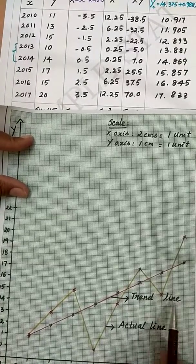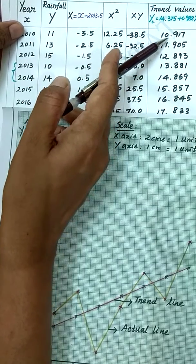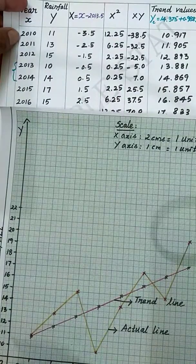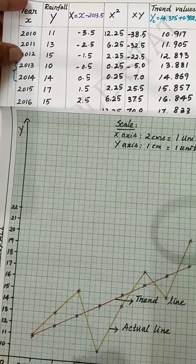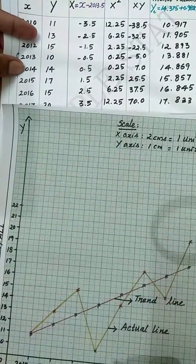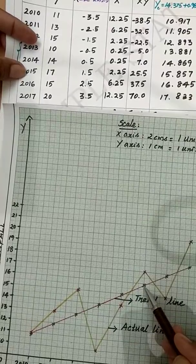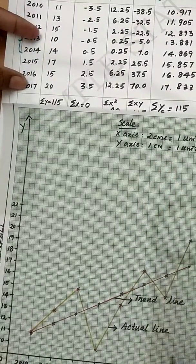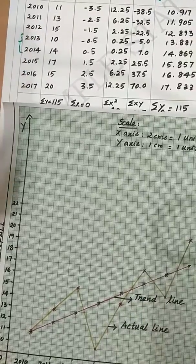Now plot the trend values: for 2010 the trend value is 10.917, rounded to 10.9; then 2011→11.9, 2012→12.9, 2013→13.9, 2014→14.9, 2015→15.9, 2016→16.8, and 2017→17.8. Join these trend values using a scale to get the trend line.